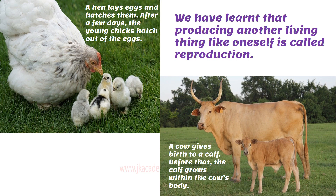Let's learn about reproduction. Producing another living thing like oneself — similar to one's own self — is called reproduction. We know that hens lay eggs and hatch them. Hatching means the eggs break open and the little young ones, called chicks, come out after a few days. So the hen does not reproduce the chicks directly; it lays eggs, and after some days the eggs hatch and the chickens come out.